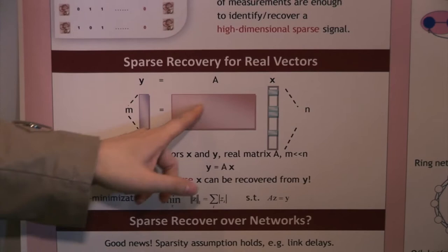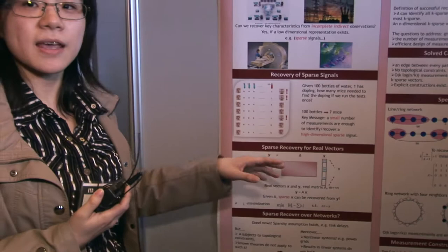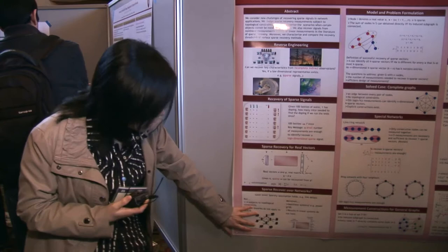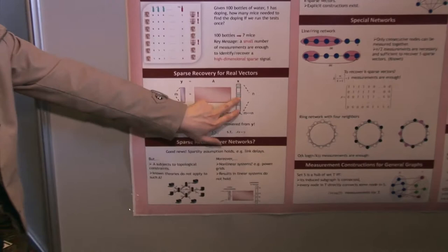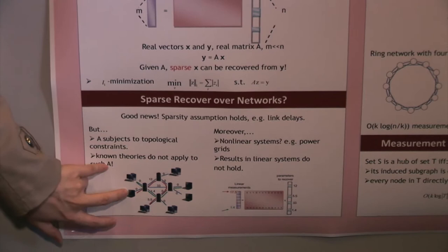But the problem is in sparse recovery, if you look at this matrix, they actually assume that the matrix can be any real value matrix, which means you can measure the weighted summation of this vector. You can measure any weighted summation of this vector. But in natural applications, sometimes some coefficients cannot be measured together in one measurement. For example, in this transmission network, this x vector denotes the transmission delay at each link.